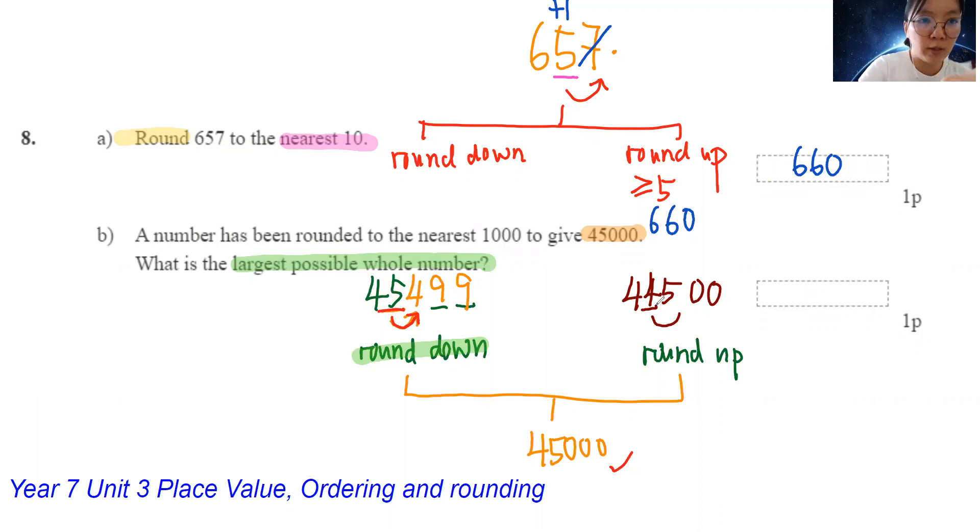So let's check between these two numbers then. I have 45,499 and 44,500. Which one is the largest? Of course, 45,499. Therefore, in this case, this number is the largest number. When I round down, it will give me 45,000. So the answer would be 45,499.